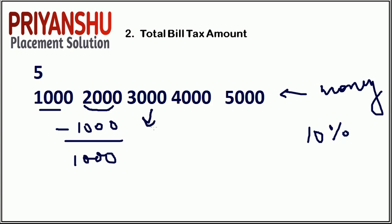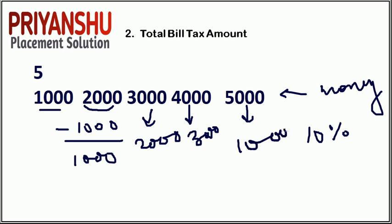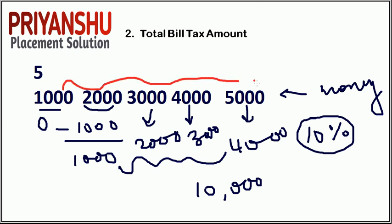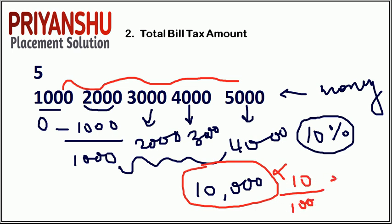Similarly, for 3000, 4000, and 5000, we subtract 1000 from each value. Then we add all the remaining values: 1000 + 2000 + 3000 + 4000 = 10,000. We find 10% of 10,000, which is 1000. So the total tax amount is 1000. No tax is applied to the base 1000 from each entry, and the tax rate is 10 percent.